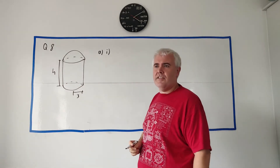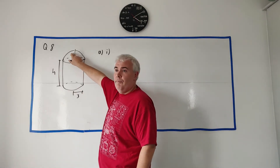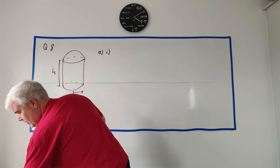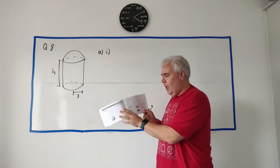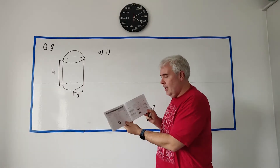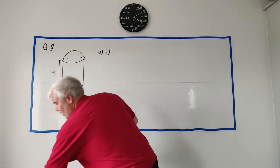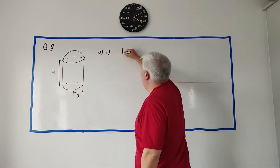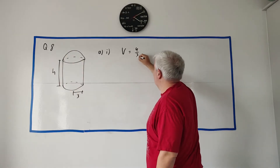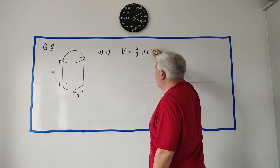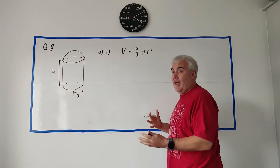The first question asks us to find the volume of the hemisphere. To do that we go to our formula book. A lot of students know these off the top of their head, but go to the correct page and you'll find the formula for volume of a sphere: 4/3 π r³.